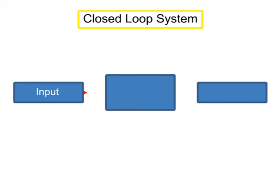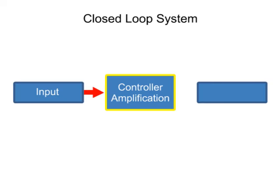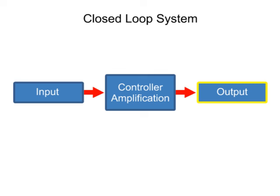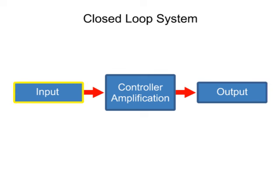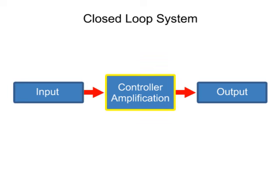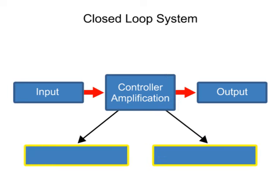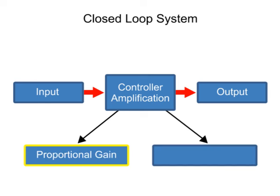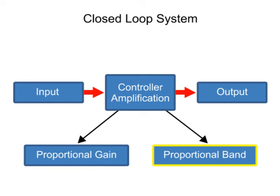In a closed-loop system, a controller is used to amplify the amount of output change in proportion to the change that occurs at the input. Controllers provide amplification using one of two modes of proportional functions: proportional gain and proportional band.